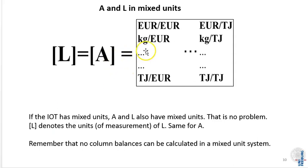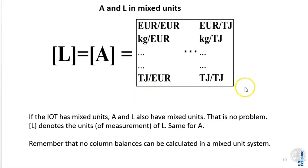When you take the A matrix and compute the units of different powers of it, you realize that A-squared has exactly the same units as A, even in the mixed-unit case. A-cubed has the same units as A, and so on. This means the Leontief inverse also has the same units as the A matrix, making it possible to write down the input-output model where all commodities have their respective own units.